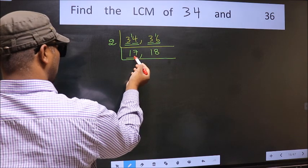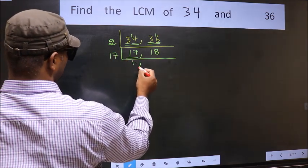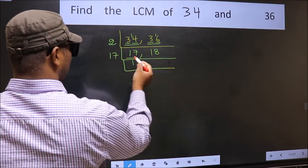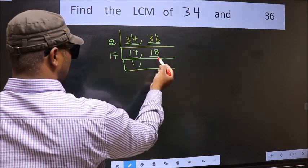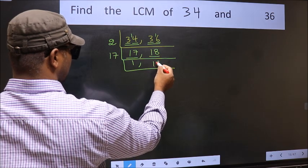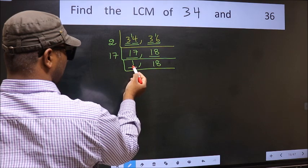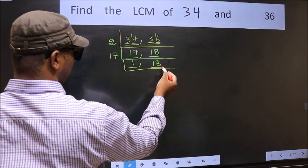Now here we have 17. 17 is a prime number, so 17, 1, 17. The other number 18, not divisible by 17, so we write it down as it is. Now we got 1 here, so focus on the other number 18.